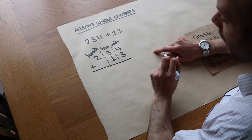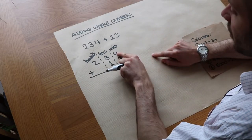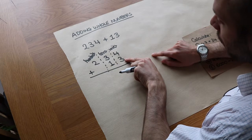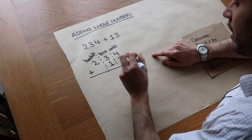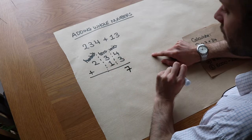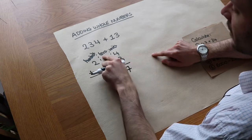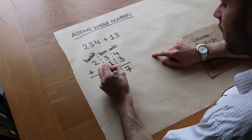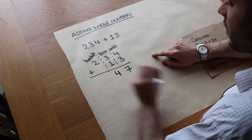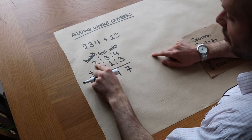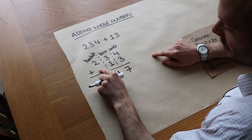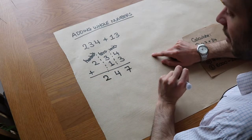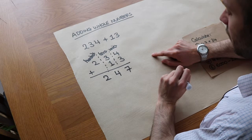We can just add the unit digits: we have 4 units and we add 3 units, so 4 plus 3 is 7 units. For the tens digit, we have 3 tens and we add 1 ten, giving us 4 tens. Then we have 2 hundreds and we're not adding any extra hundreds, so that's just 2 hundreds. We'd end up with 247.